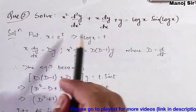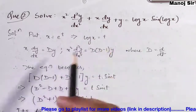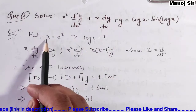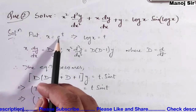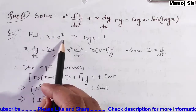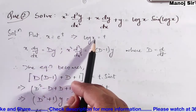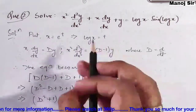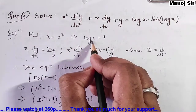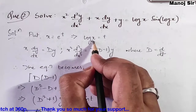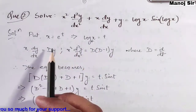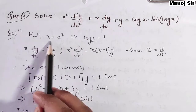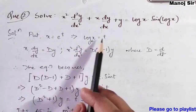In such type of problem, to solve it, simply put x = e^t. If you apply log on both sides, you will get log(x) = t. Remember that here the base is e. So if you put x = e^t and apply log, you will get log(x) = t.